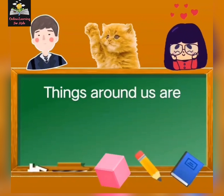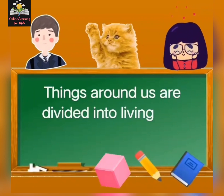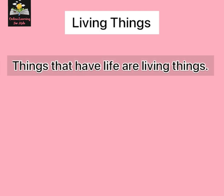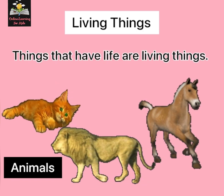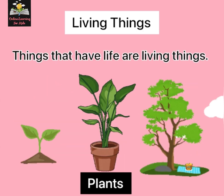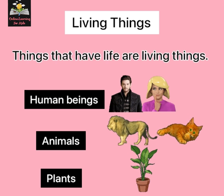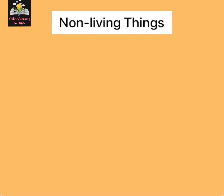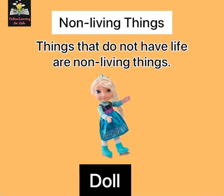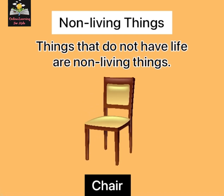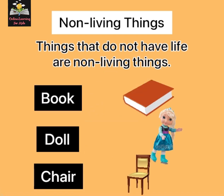Things around us are divided into living and non-living things. Living things that have life are called living things, like human beings, animals, and plants. Things that do not have life are non-living things, like a book, doll, and chair.